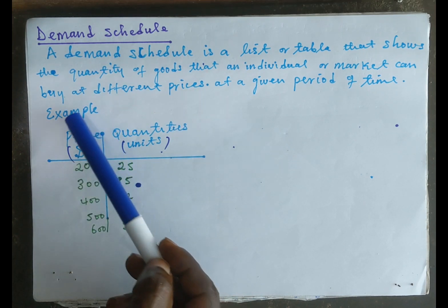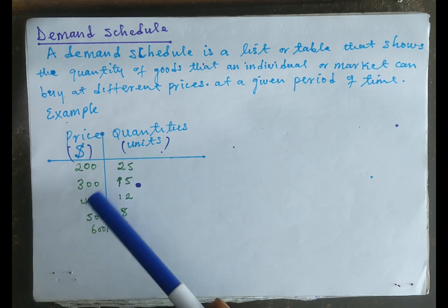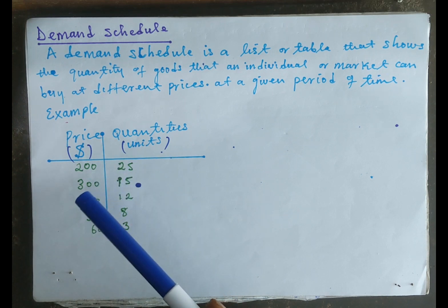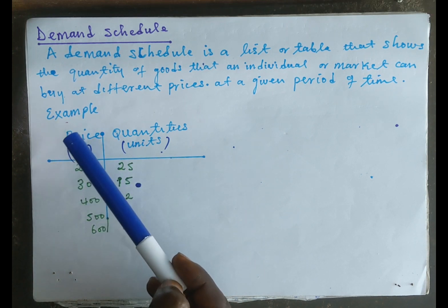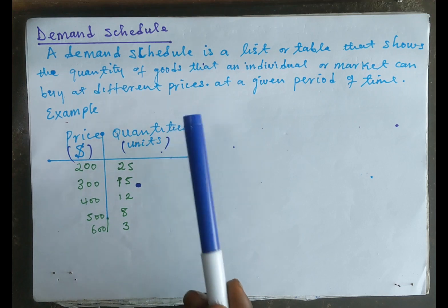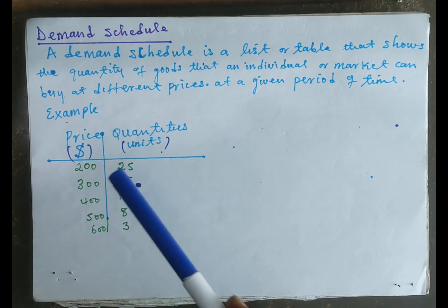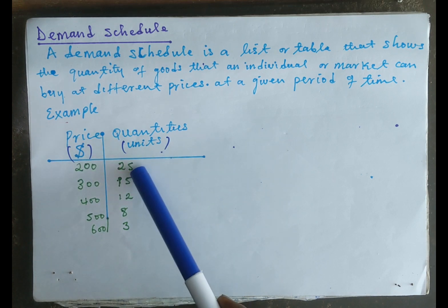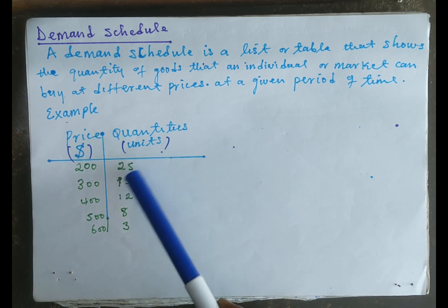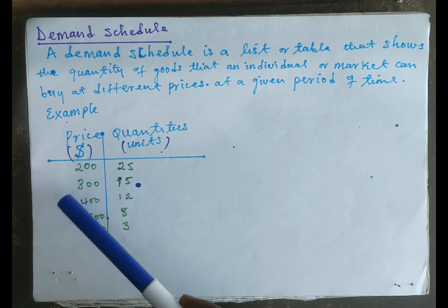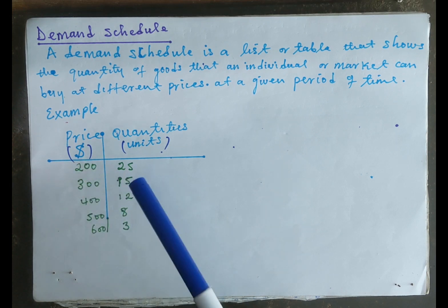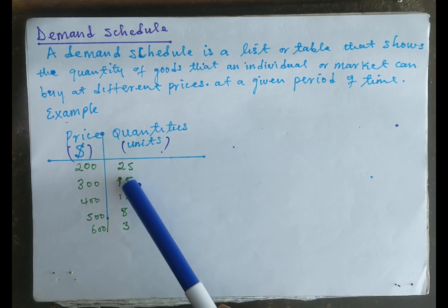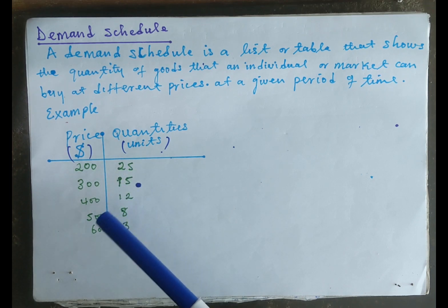This can be illustrated using the table shown, with prices in US dollars and quantity in units. We can see that at a price of 200 US dollars the quantity demanded is 25 units, and as price increases from 200 to 300 US dollars the quantity demanded falls from 25 units to 15 units.